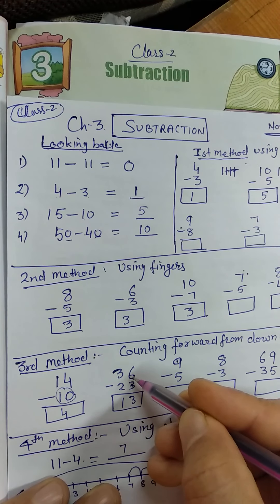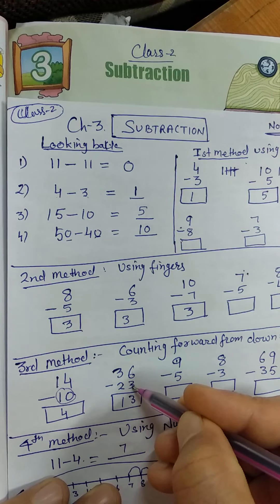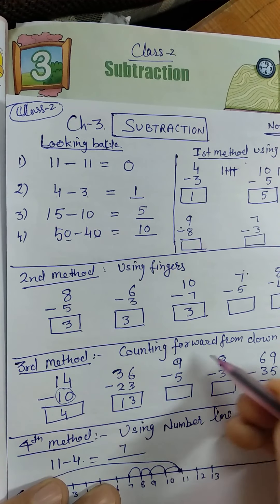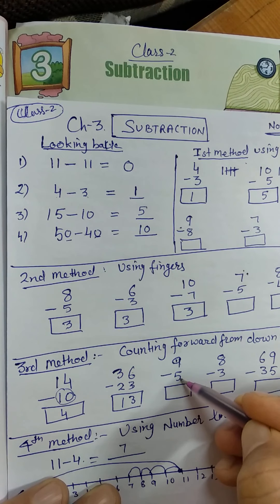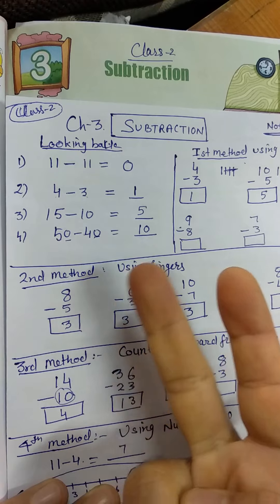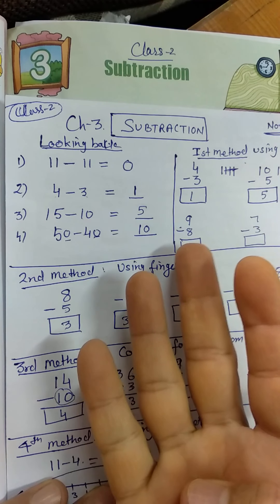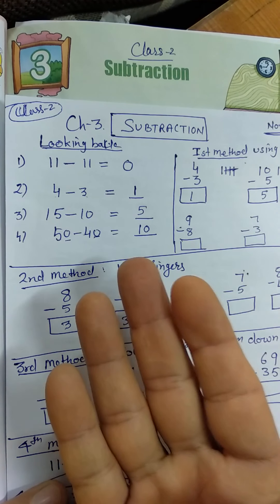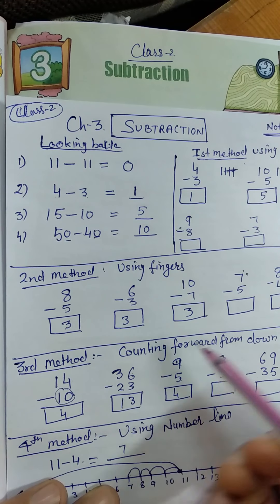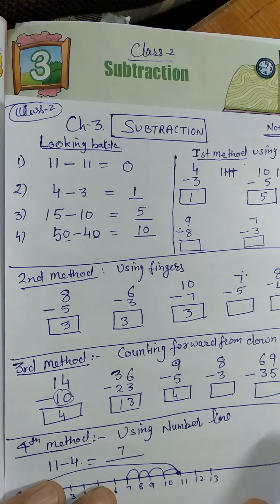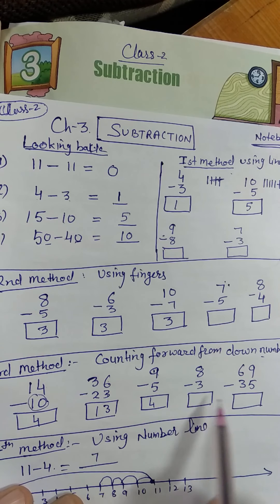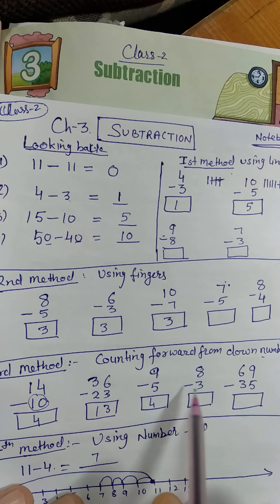You can also use fingers for this: open 6 fingers, close 3, then 3 will be left; open 3 fingers, close 2, then 1 will be left. For 9 minus 5: after 5 you count up to 9 — 6, 7, 8, 9 — so the answer is 4. You can use any of the methods: fingers, counting forward, or drawing lines. Try the rest of the two parts yourself.